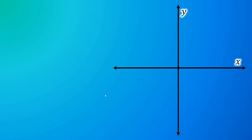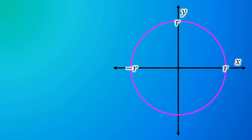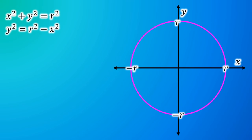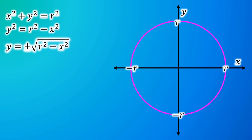Here are our axes. Here is the circle with radius r, centered at the origin, so its equation is x² + y² = r². Subtract x² from both sides and solve for y. The positive square root gives the upper semicircle and the negative square root gives the lower semicircle.